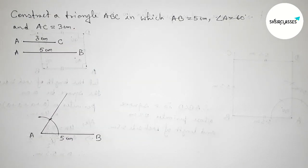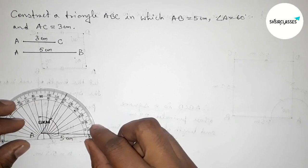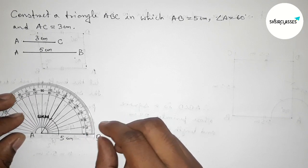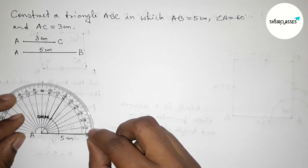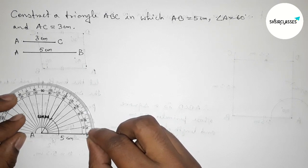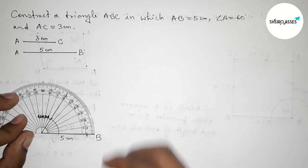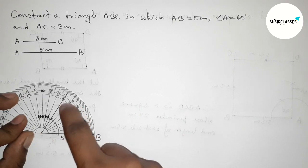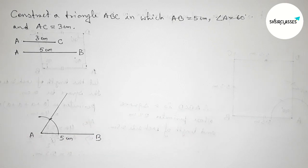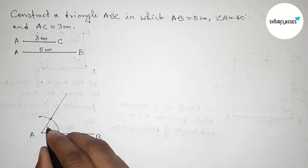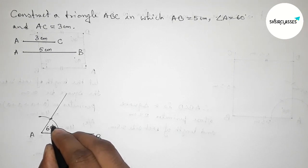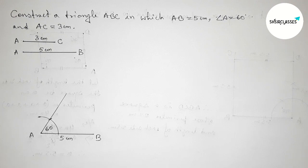Now checking this angle with the help of a protractor to verify whether it is a 60 degree angle or not. This is perfectly a 60 degree angle, so angle A equals 60 degrees.